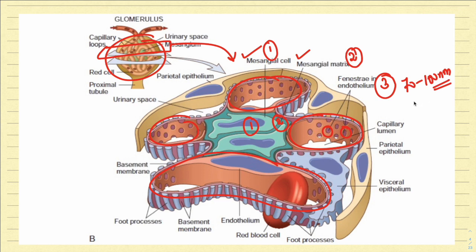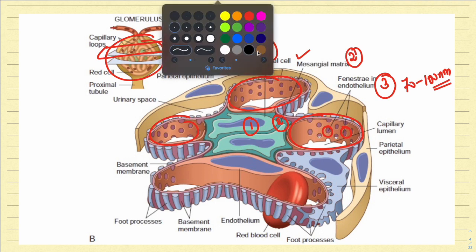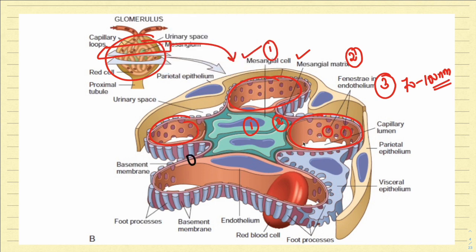Just outside the endothelium, there is a pinkish lining. Let me show you with the help of this black pen — can you appreciate this pinkish lining here? There is a pinkish structure lying just outside the capillary, and that is the basement membrane. So lying outside the endothelium, we have the fourth structure called the basement membrane.